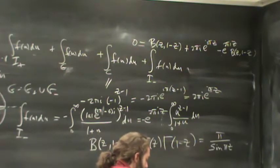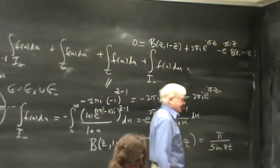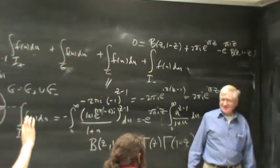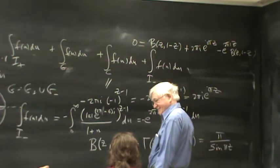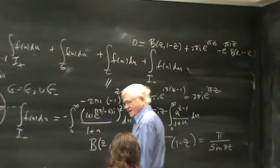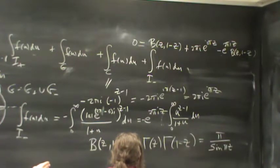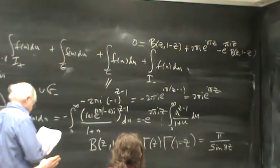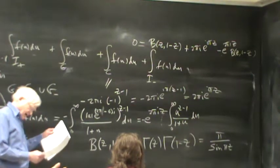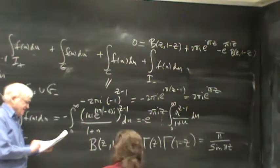Conformal mapping: imagine F(z) is analytic and maps to W. Consider two little vectors dZ and dZ', which F maps to dW and dW'. The angle between dZ and dZ' in the Z-plane is the phase of dZ'/dZ. Since dZ = ε·e^{iθ} and dZ' = ε·e^{iθ'}, the angle is e^{i(θ'-θ)}, so the angle dθ is the phase of dZ'/dZ.